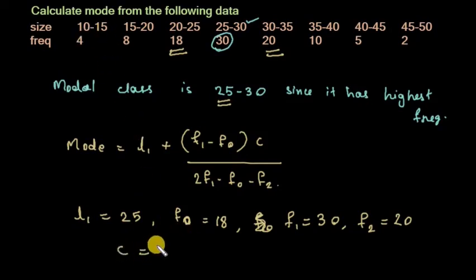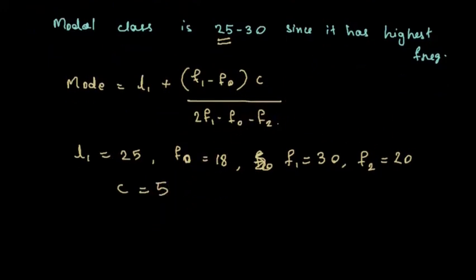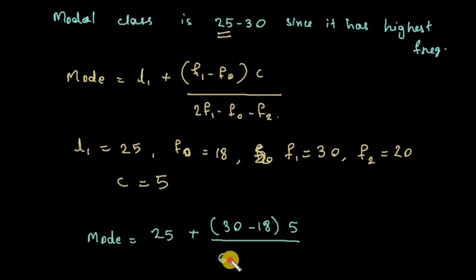Applying the formula: Mode = 25 + (30 - 18) × 5 / (2 × 30 - 18 - 20). This equals 25 + (30 - 18) × 5 / (60 - 18 - 20).